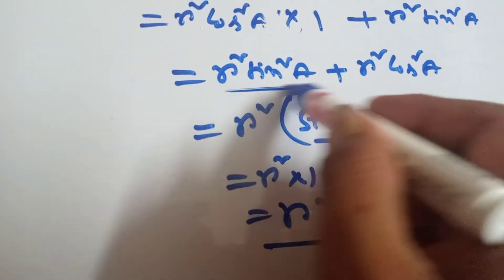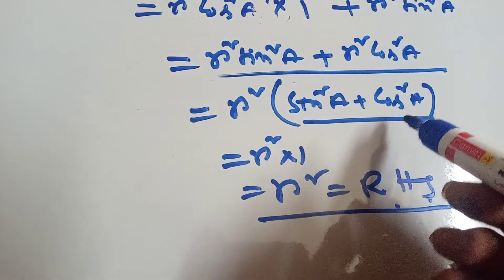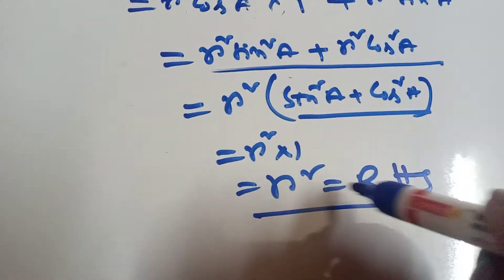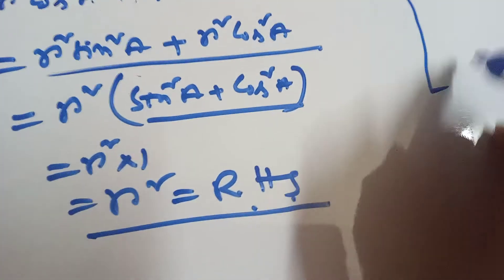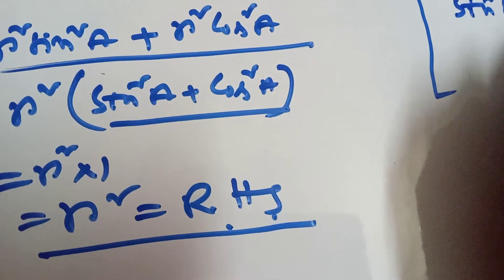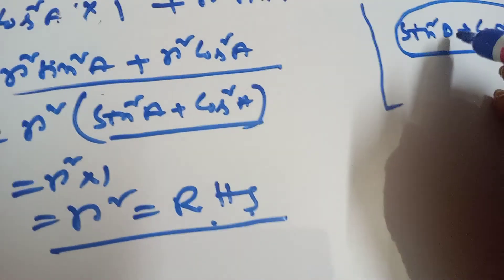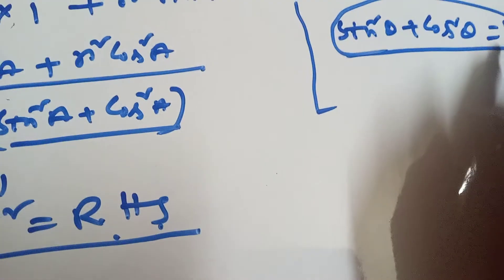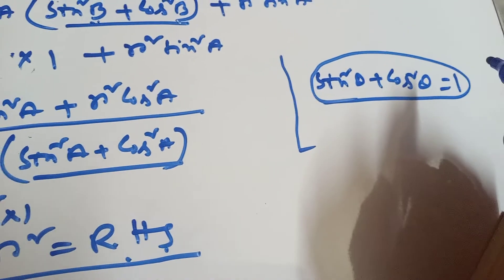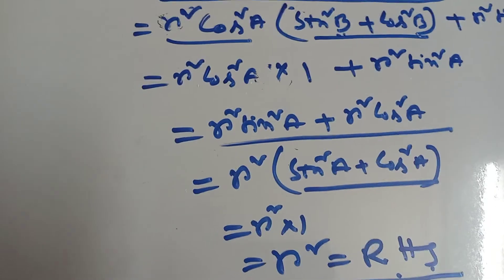Again take R square common, leaving sin square A plus cos square A — angle is the same — that means this is also 1, so R square into 1 equals R square. You must remember: sin square theta plus cos square theta equal to 1. This is the formula of trigonometrical identities.